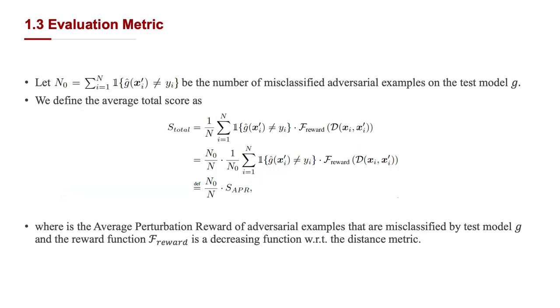The imperceptibility of adversarial examples is hard to evaluate due to the lack of precise quantization of human perception. Prior work found that Lp-norm distance is not an ideal perceptual similarity metric and suggests setting adaptive perturbation budget for every sample to ensure that the generated adversarial examples would be imperceptible.